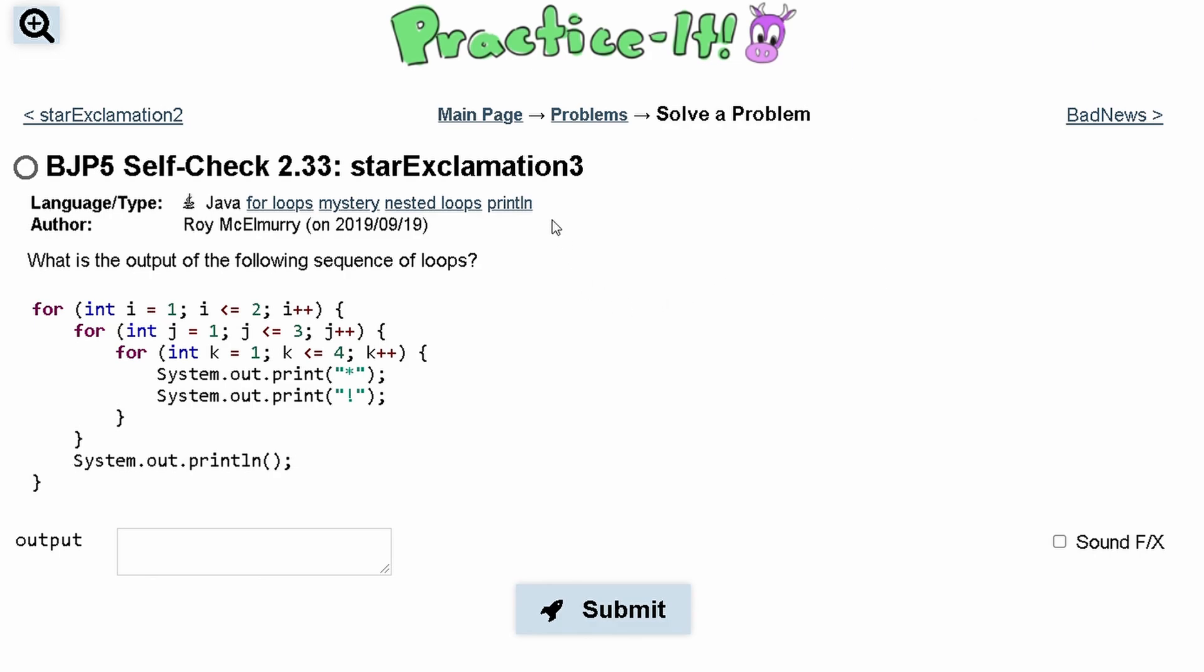For practice self-check 2.33 star exclamation 3, we were asked what is the output of the following sequence of loops. We have a for loop right here, another for loop right here, and another nested for loop right here. This setup of for loops is similar to a previous example, so we're not going to explain too much of that.